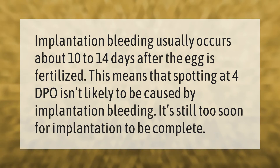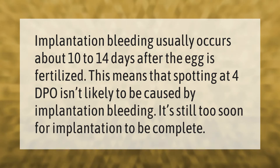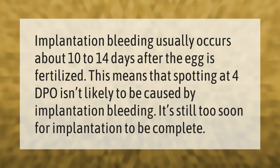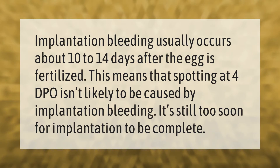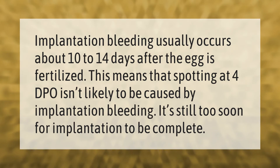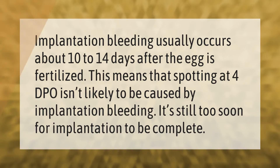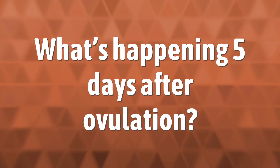Implantation bleeding usually occurs about 10 to 14 days after the egg is fertilized. This means that spotting at 4 DPO isn't likely to be caused by implantation bleeding — it's still too soon for implantation to be complete.